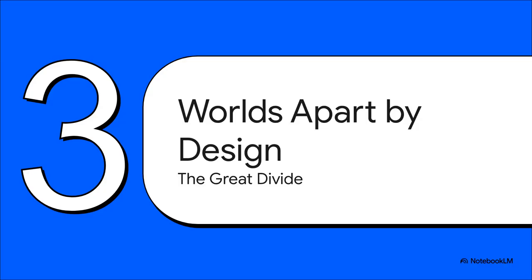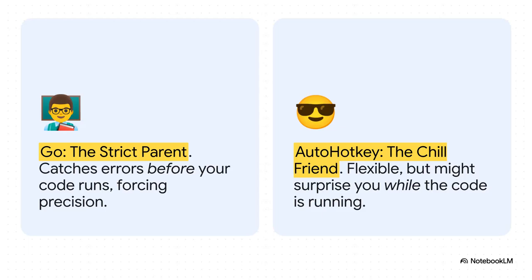But that's kind of where the family resemblance stops. Because their differences aren't bugs — they're features. They're intentional, carefully chosen trade-offs that make each of these tools an absolute specialist in its own domain. And this is maybe the best way to think about one of the biggest divides: Go is like a strict parent.